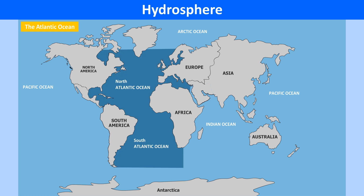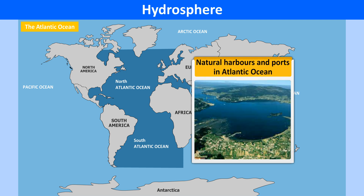The Atlantic Ocean is the second largest ocean, covering one-fifth of the Earth's surface. It separates Europe and Africa from North America and South America. The average depth of this ocean is about 3,330 meters. It is S-shaped.